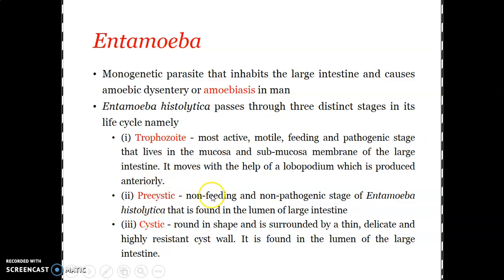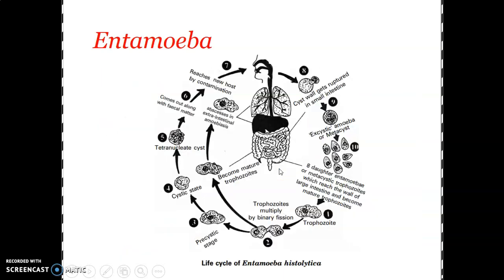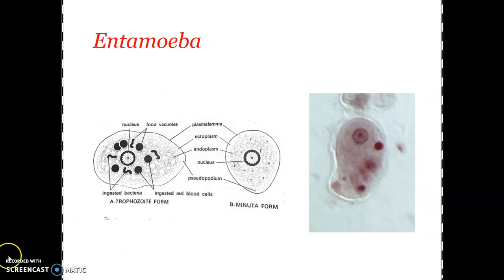The pre-cystic form or minuta form is non-feeding and non-pathogenic, found in the lumen of the large intestine. Then comes the cystic stage — it is round in shape, surrounded by a thin, delicate, highly resistant cyst wall, found in the lumen of the large intestine. In this form it is passed out into the environment, from where it enters a new host. The life cycle will be dealt with in detail in the coming presentation.